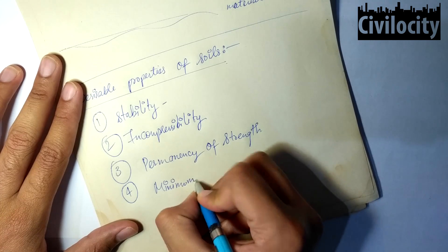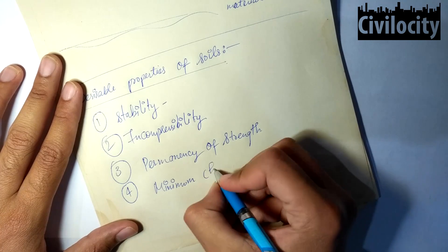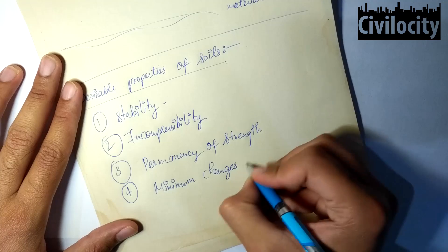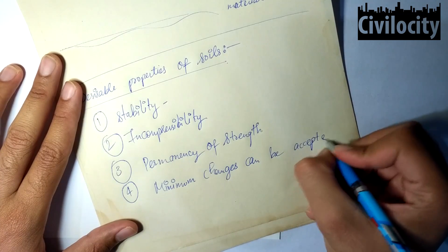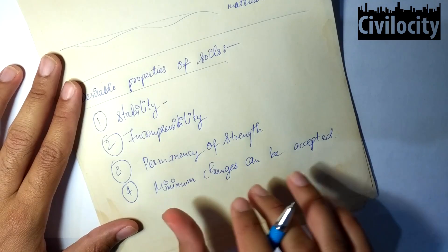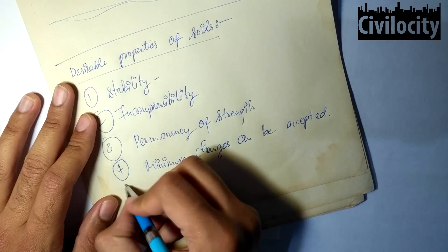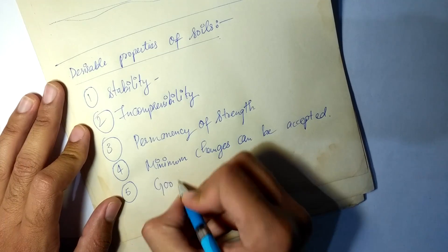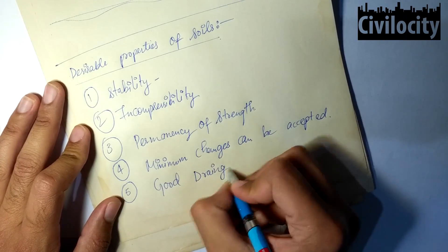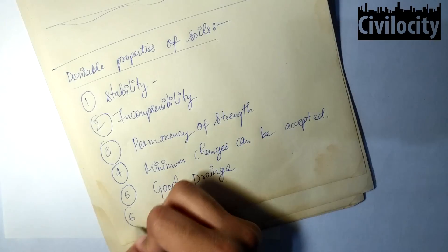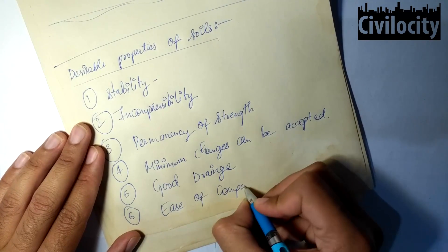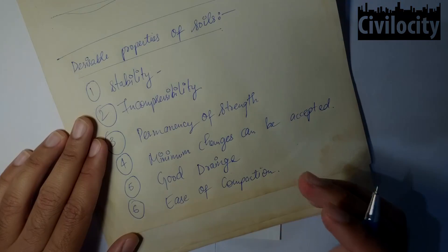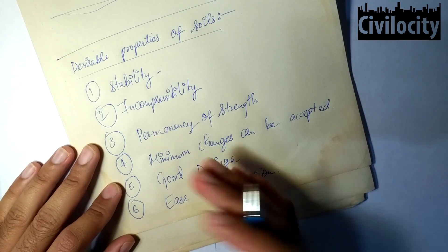What does it mean by minimum changes? Like in adverse conditions: adverse rainfall, heavy rainfall, heavy snowfall, high temperature, the lowest temperature. Minimum changes can be accepted under adverse conditions, but not in normal conditions. The fifth one is there should be good drainage, and the sixth point is our soil should be workable and there should be ease of compaction. These are the six desirable properties that we desire from our soil.